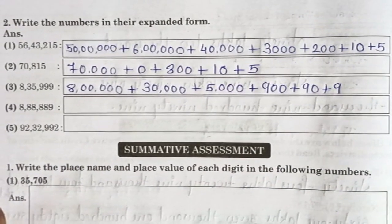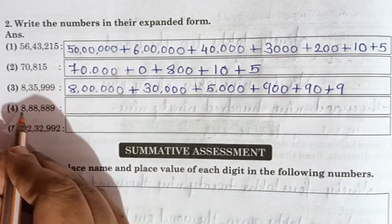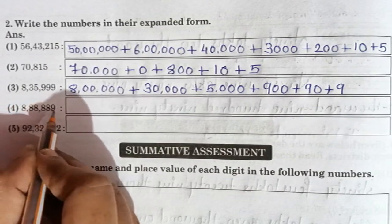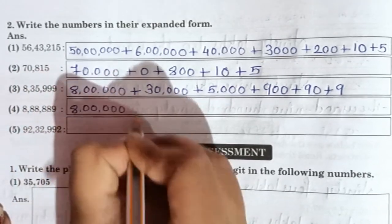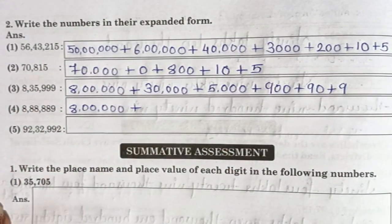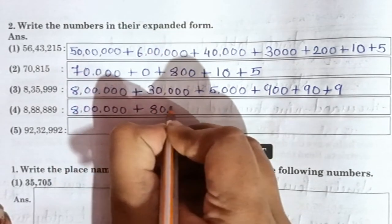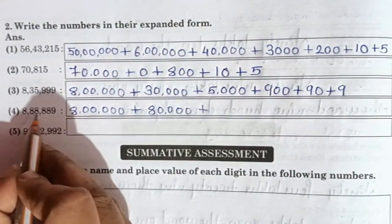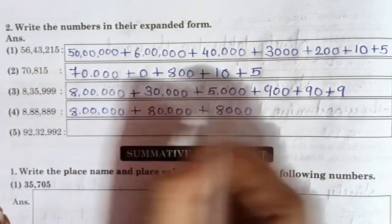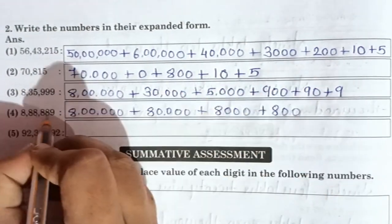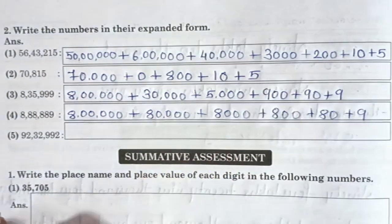Fourth number is 8,88,889. First 8 is at lakhs place: 8,00,000. Plus second 8 is at ten-thousands place: 80,000. Plus 8 at thousands place: 8,000. Plus 8 at hundreds place: 800. Plus 8 at tens place: 80. Plus 9 at units place: 9.